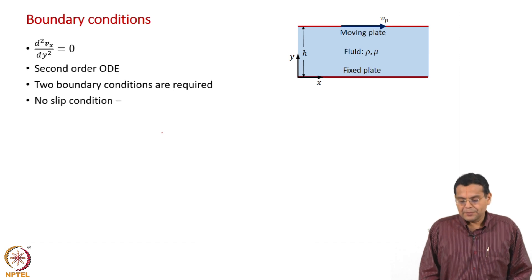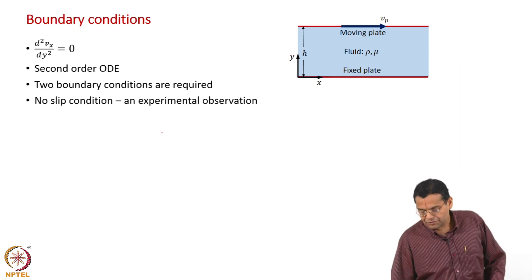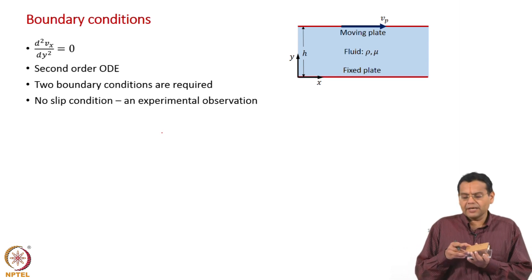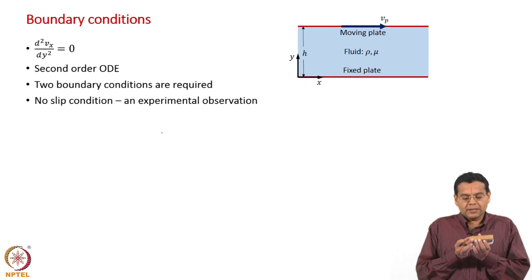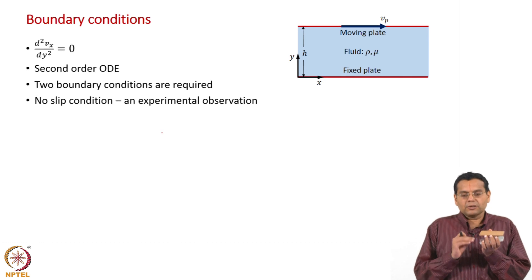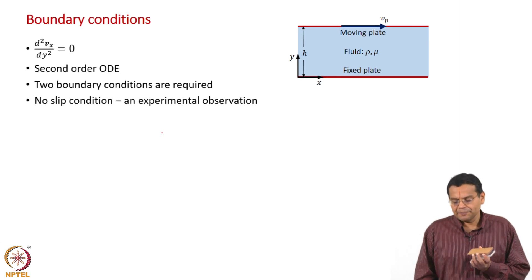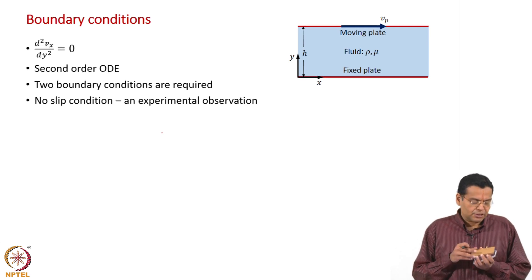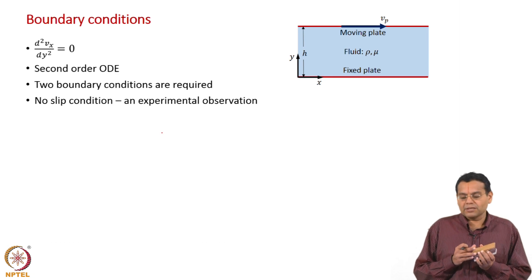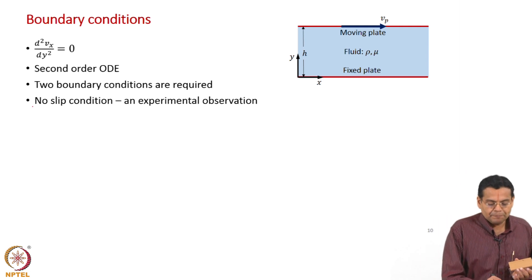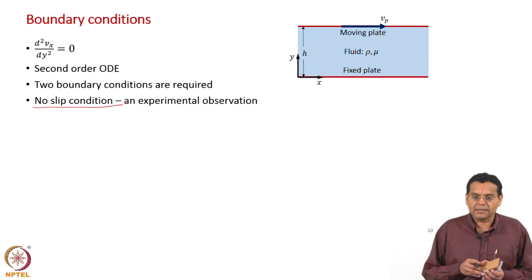So far, we have been saying that whenever we came across this example, the fluid clings to the bottom plate, also clings to the top plate, and this fluid does not move, while this fluid moves at the same velocity as the top plate. So far I have purposely not used a very formal terminology — we used a somewhat informal terminology, saying that it 'clings.' What is the formal terminology? It is called the no-slip condition.